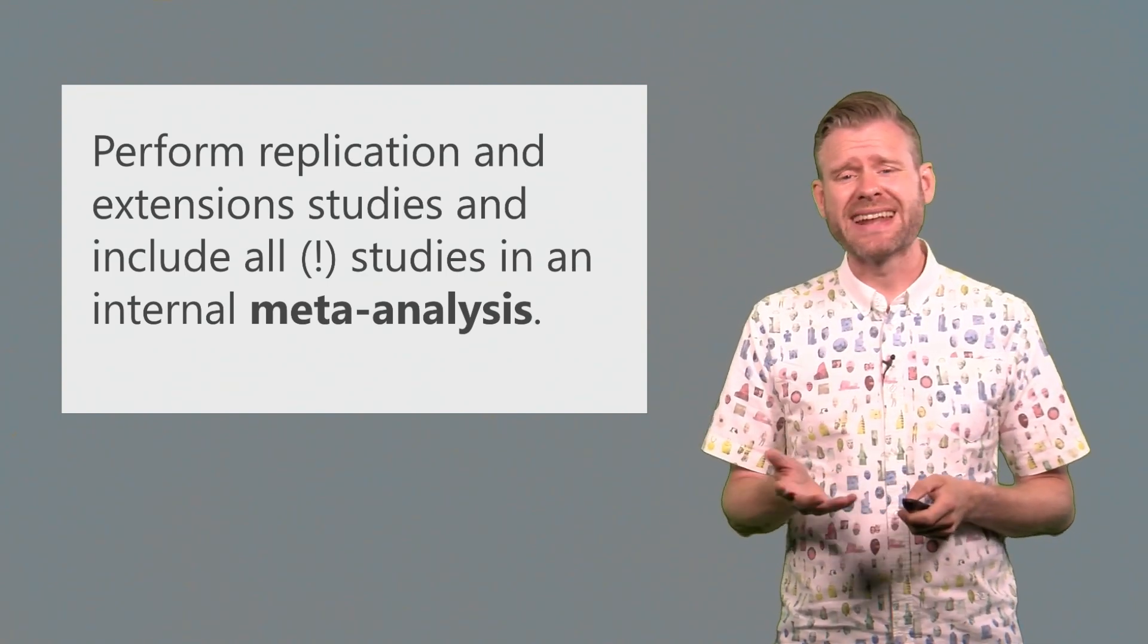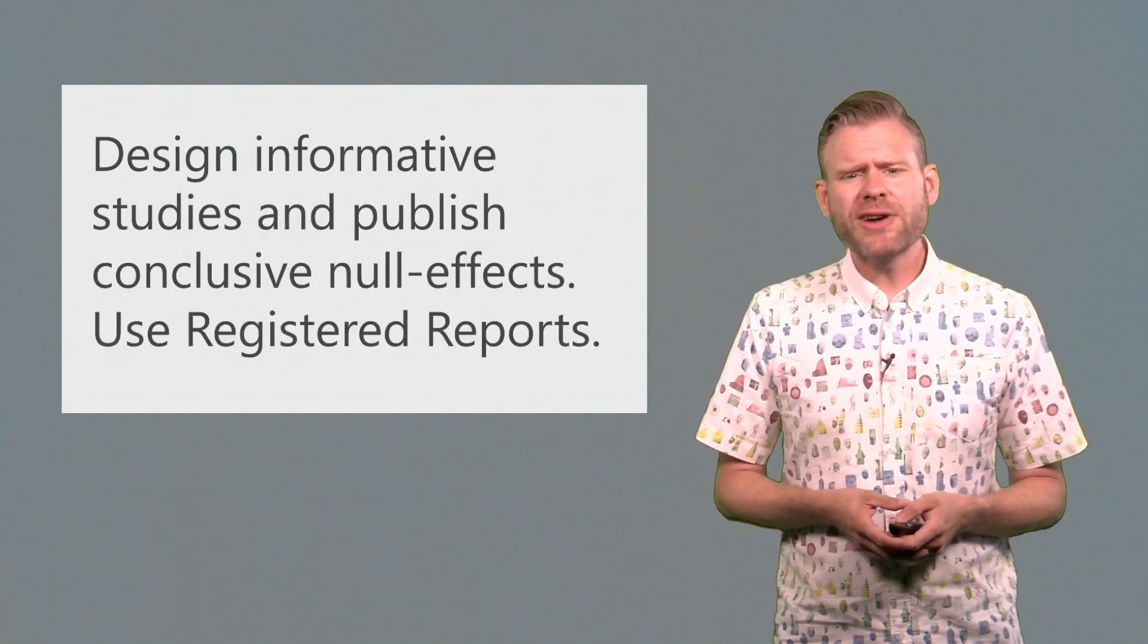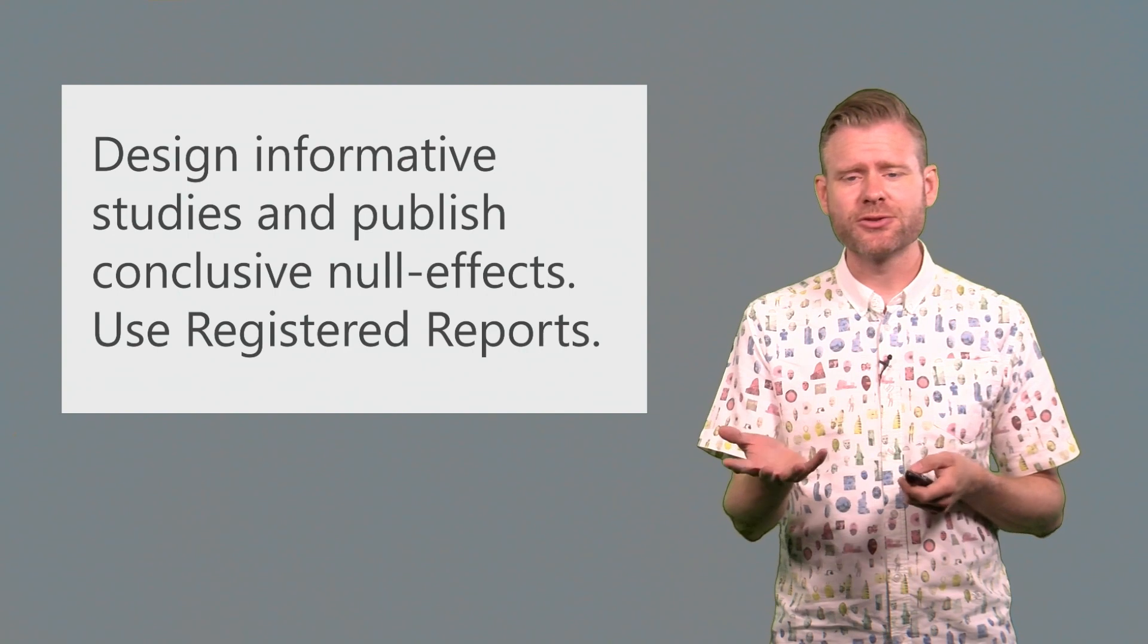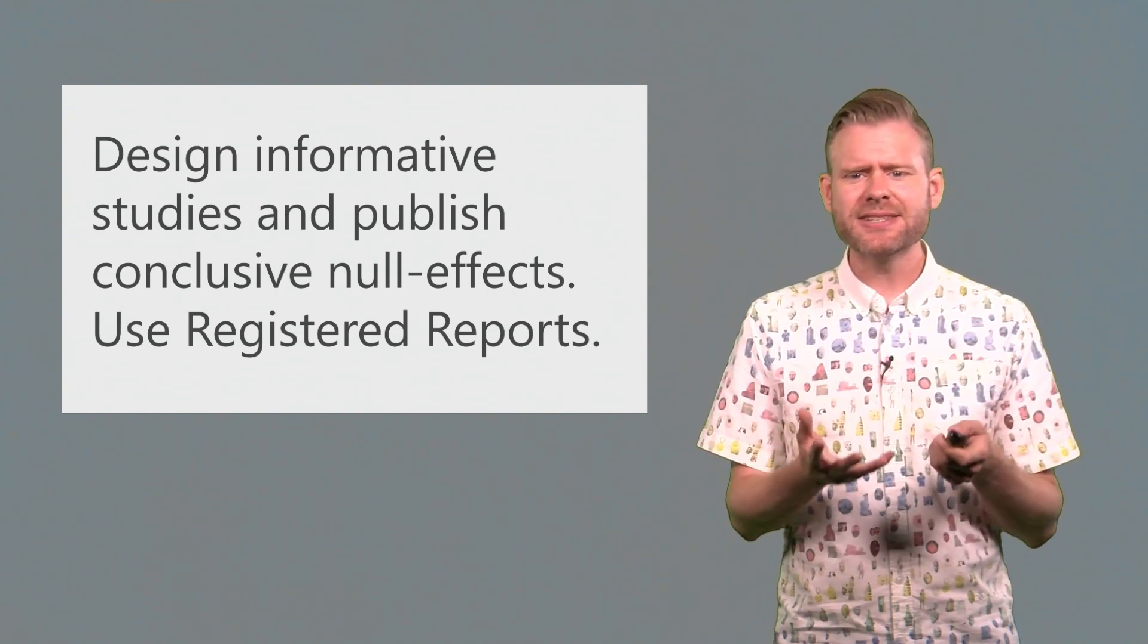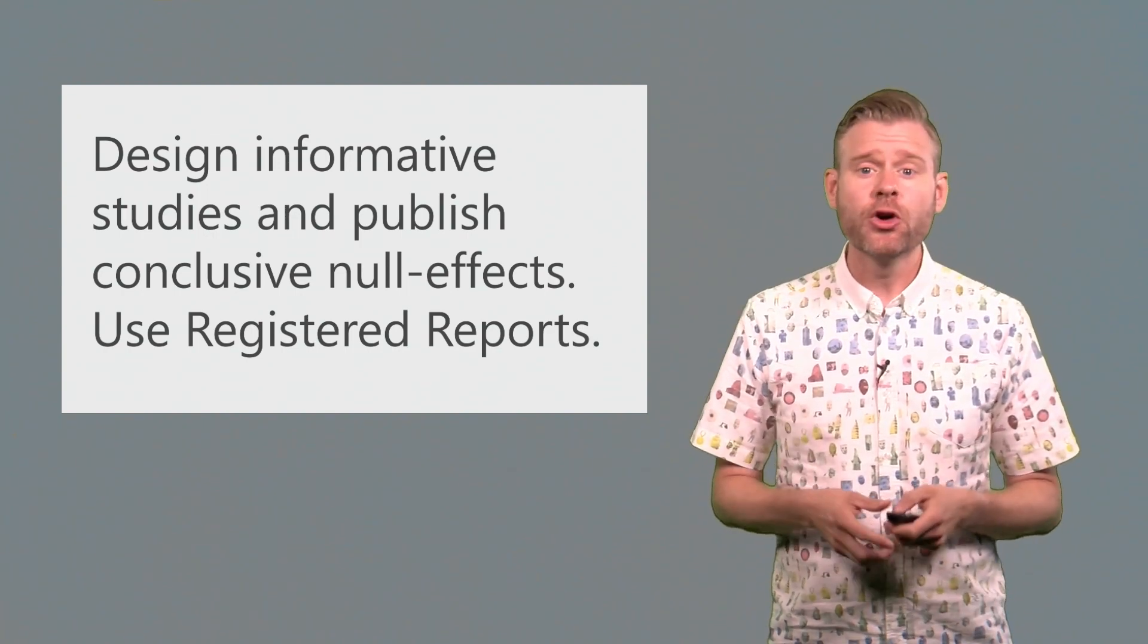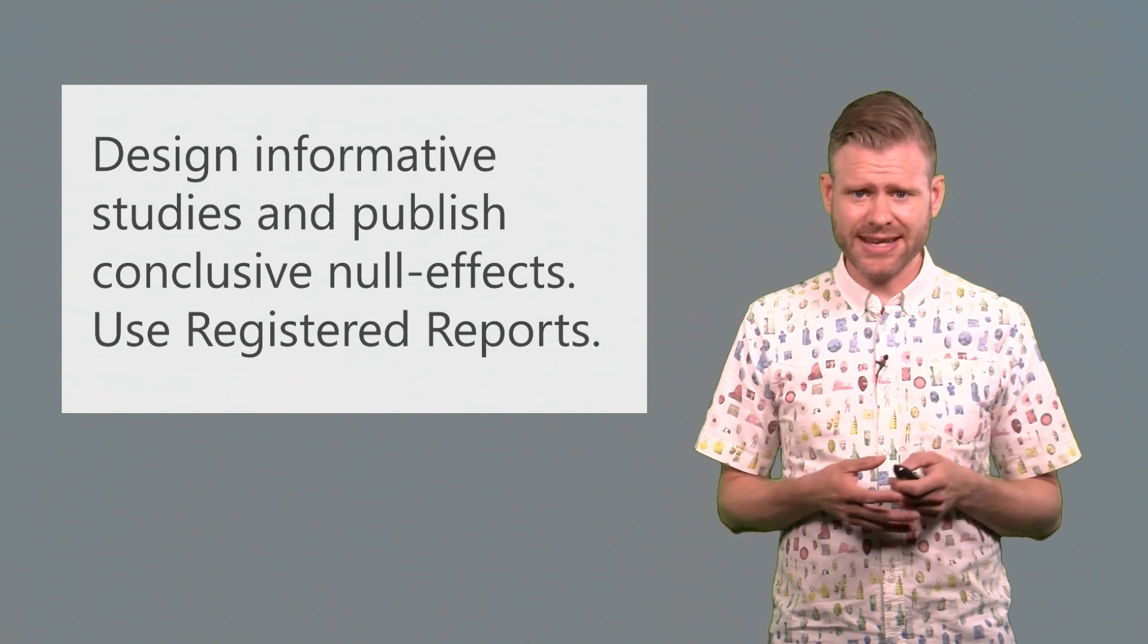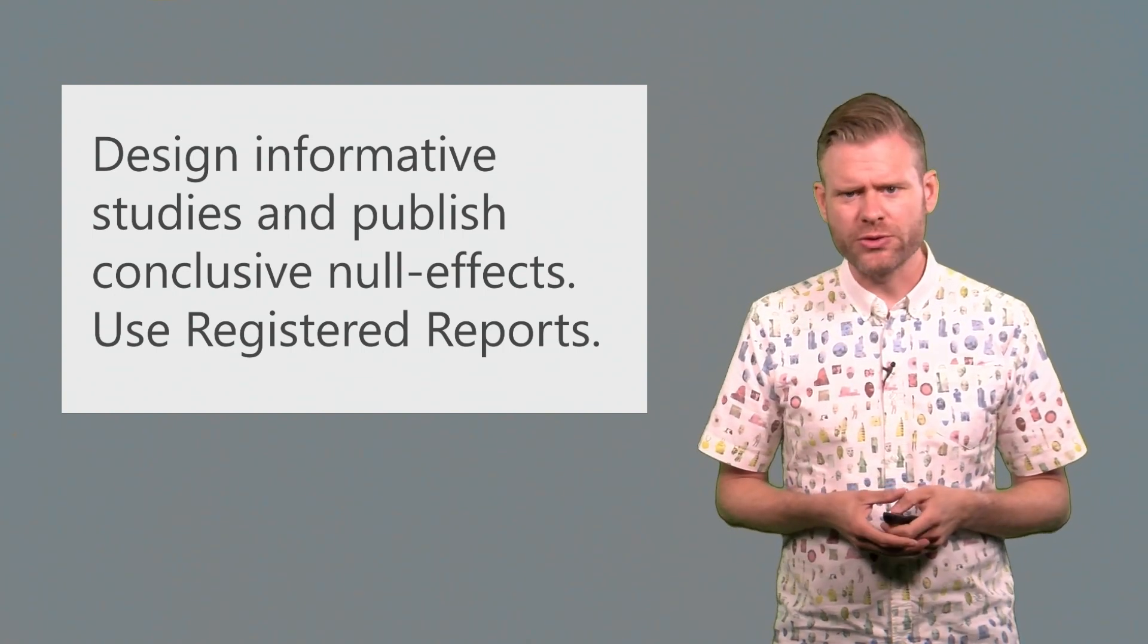Try to design informative studies and publish conclusive results, both when the alternative hypothesis is true as when the null hypothesis is true. Make sure that if you design a study and ask a question, the result is also interesting when the null hypothesis is true. We talked about how you can falsify predictions and test things through equivalence tests, for example. And this is one way to design and publish informative null results.